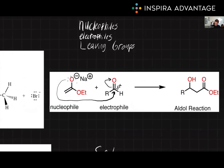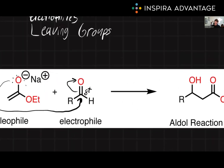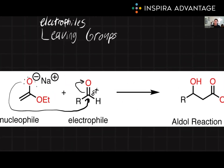Now let's take a glance at electrophiles. Electrophiles are molecules or ions that possess a positive charge or are positively polarized, and are attracted to negatively charged centers, also known as nucleophiles. Electrophiles are electron-loving — electro and phile, electron-loving. They can accept a pair of electrons from a nucleophile, forming a new covalent bond.